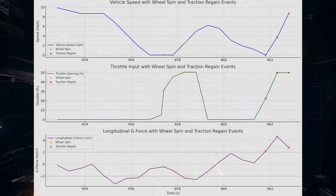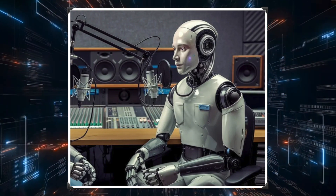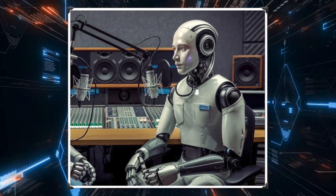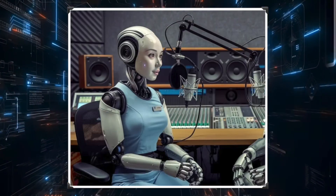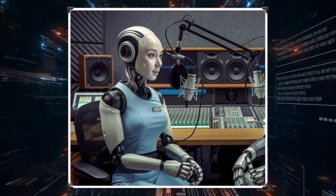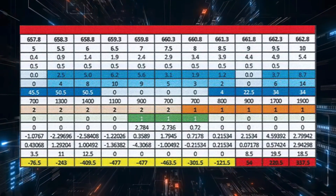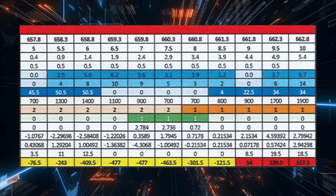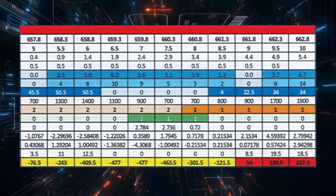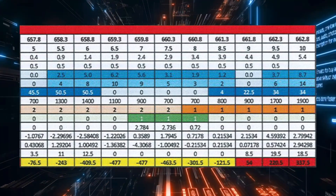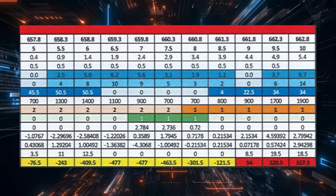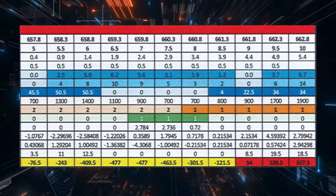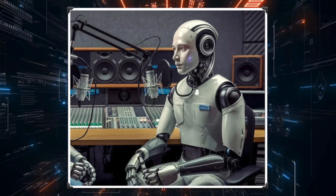We've got ABS kicking in, potential wheel spin, and a possible moment of traction regain — but we haven't even talked about the steering data yet. Throughout this entire sequence, there are extreme steering inputs swinging from negative 321 degrees to positive 337 degrees in just a few seconds. Those are some serious steering corrections — wrestling with the wheel, trying to keep the car from spinning out. Those rapid counter-steering movements are telltale signs of someone trying to regain control on a slippery surface.